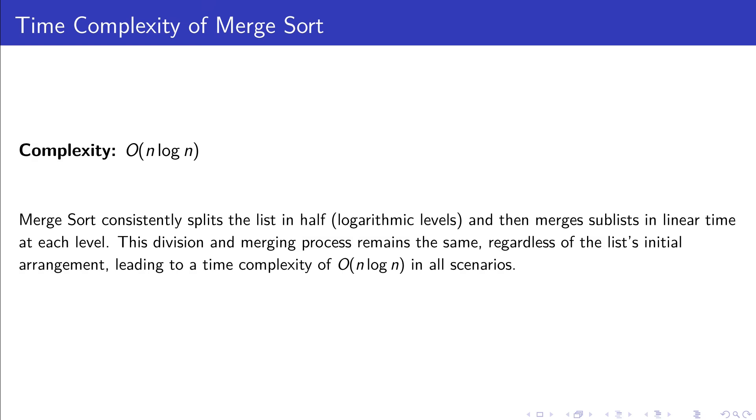In the first layer of this tree, we merge two half-length sequences. In the second, we merge four sequences, each a quarter in length, and this pattern continues. For each layer, merging operations take linear time, proportional to the number of elements in the sequence. So, how deep does this recursion go? The structure of the call tree closely resembles a complete binary tree.